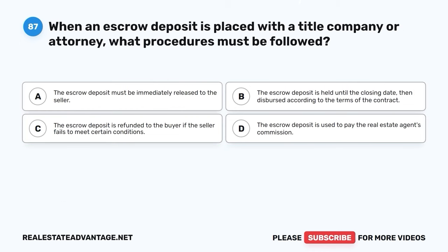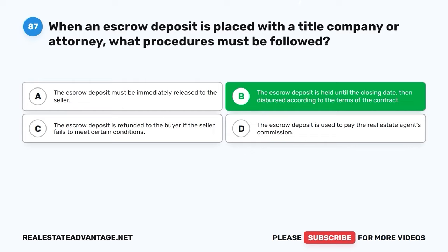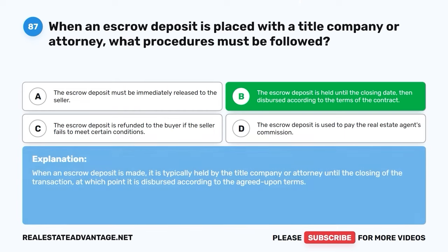Question 87. When an escrow deposit is placed with a title company or attorney, what procedures must be followed? A. The escrow deposit must be immediately released to the seller. B. The escrow deposit is held until the closing date, then dispersed according to the terms of the contract. C. The escrow deposit is refunded to the buyer if the seller fails to meet certain conditions. The correct answer is B: The escrow deposit is held until the closing date, then dispersed according to the terms of the contract. When an escrow deposit is made, it is typically held by the title company or attorney until the closing of the transaction, at which point it is dispersed according to the agreed-upon terms.